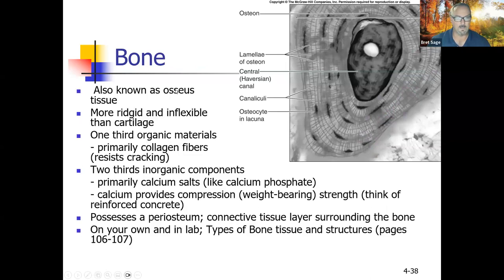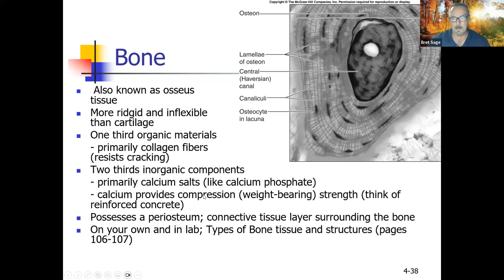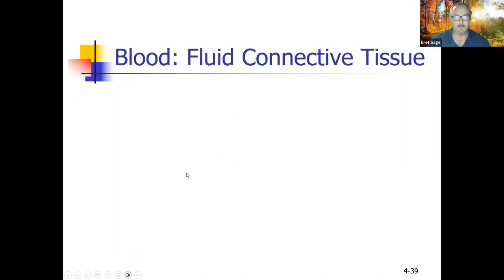Bone, also known as osseous tissue ('osseo' means bone), is much more rigid and inflexible. It is one-third organic materials, primarily collagen fibers, and two-thirds inorganic components, mainly calcium salts and water. Calcium provides weight-bearing strength — like reinforced concrete. Collagen fibers make bone less likely to crack; calcium salts provide compression force. Bones also possess a periosteum — 'peri' means around, 'osteum' means bone — a layer of connective tissue and living cells that surrounds the bone and aids in healing after a break.